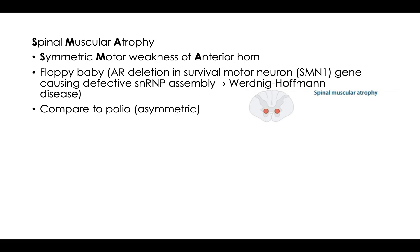They also like to ask about Werdnig-Hoffmann disease, which is a problem in your snRNP. A helpful way to remember snRNP is that snRNPs cleave things — snip, snip, then you snip something. That might help you with a question, as well as remembering that it's in the survival motor neuron. M is for motor, so that might help you remember this question as well. So spinal muscular atrophy: symmetric motor weakness of the anterior horn — SMA.